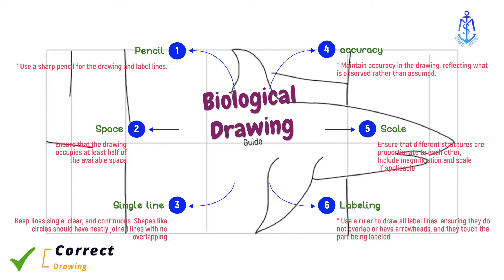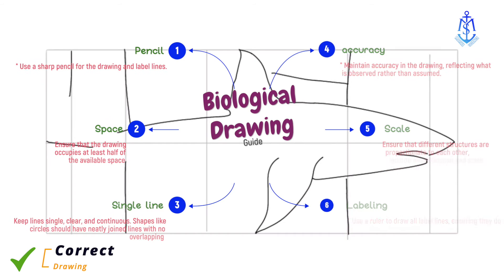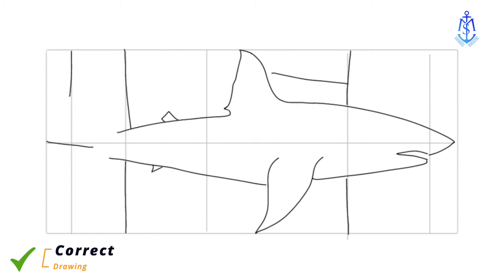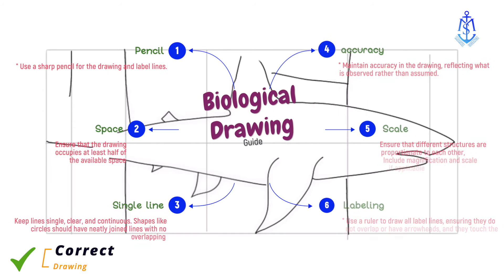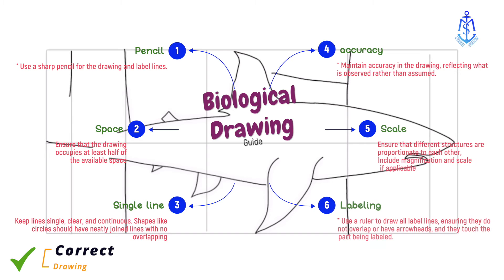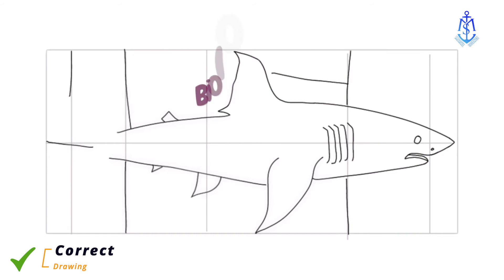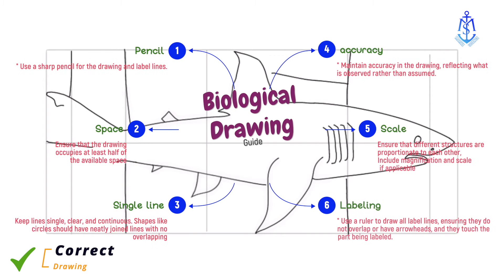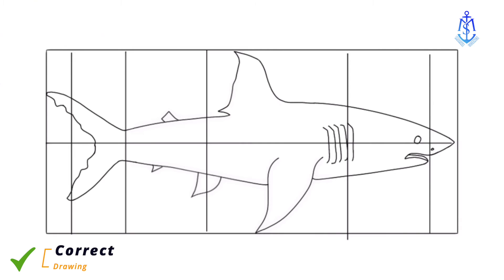Maintain accuracy in the drawing, reflecting what is observed rather than assumed. Ensure that different structures are proportionate to each other. Include magnification and scale if applicable. Use a ruler to draw all label lines, ensuring they do not overlap or have arrowheads, and they touch the part being labeled. Write labels horizontally, not following the direction of the label line.